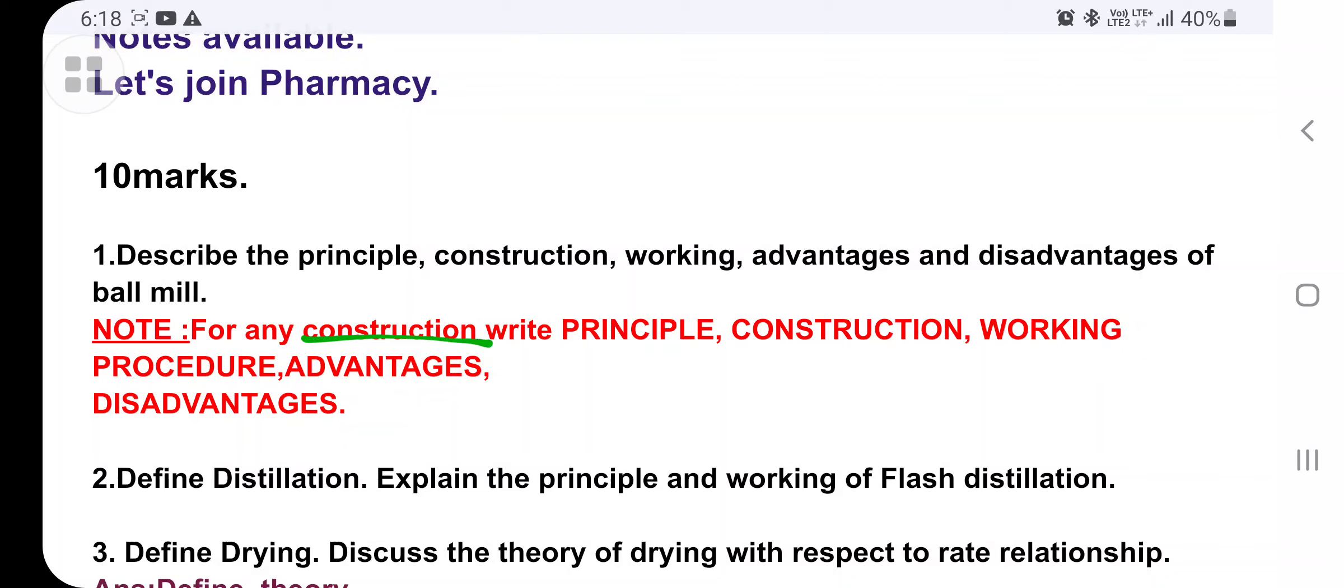Then go for working procedure, advantages and disadvantages. If you follow this, definitely you will get more than 45 marks in your pharmaceutical engineering. Just remember the diagram. If you know that diagram, you can write construction by seeing the diagram only.